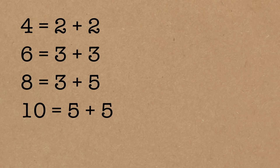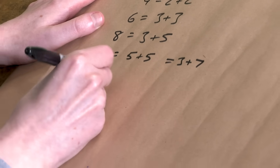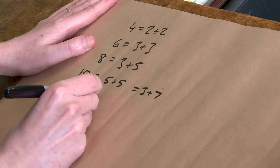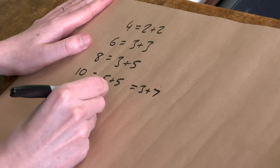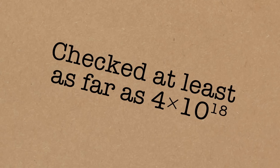It could also be 3 and 7 as well, so there's more than one way of doing it. The next number is 12, which is going to be 5 and 7, and so on. So that's what Goldbach's conjecture says — every even number greater than 2 can be written as a sum of 2 primes.